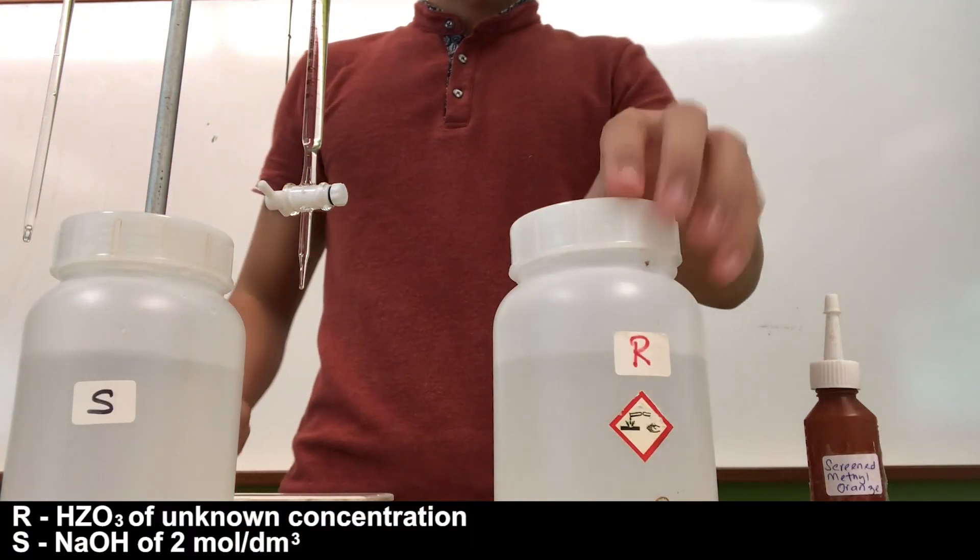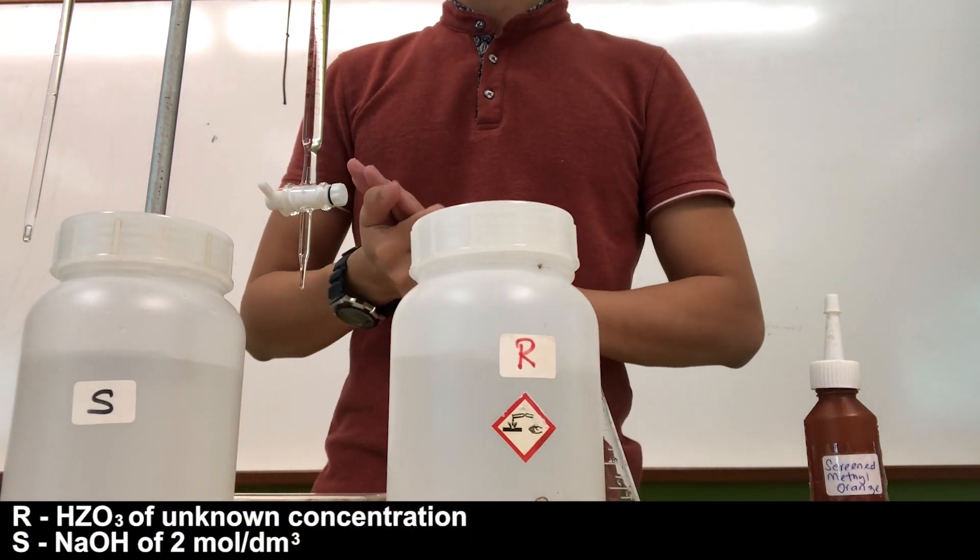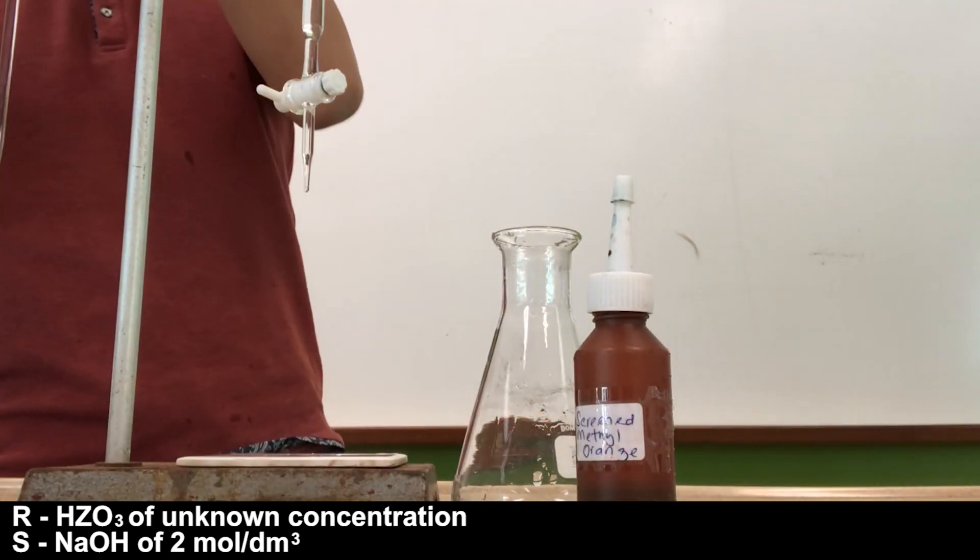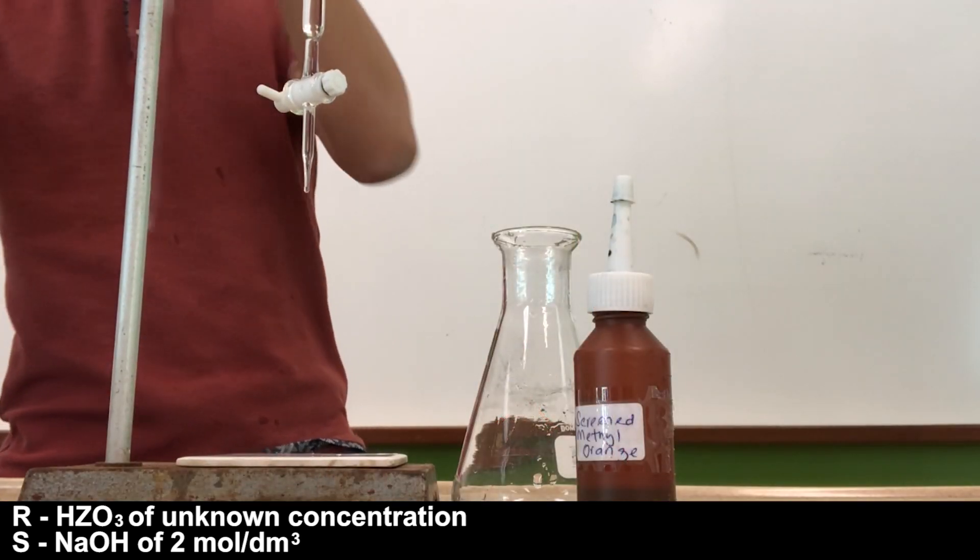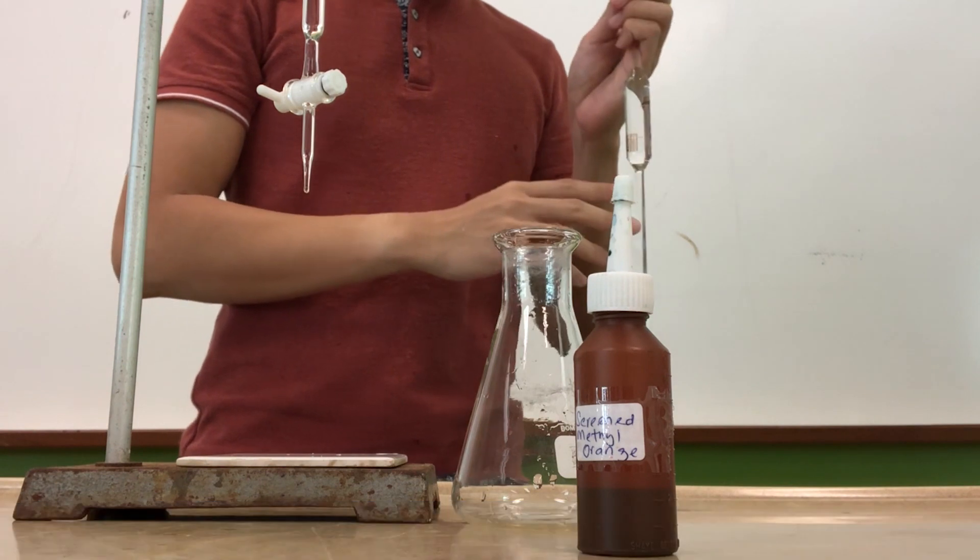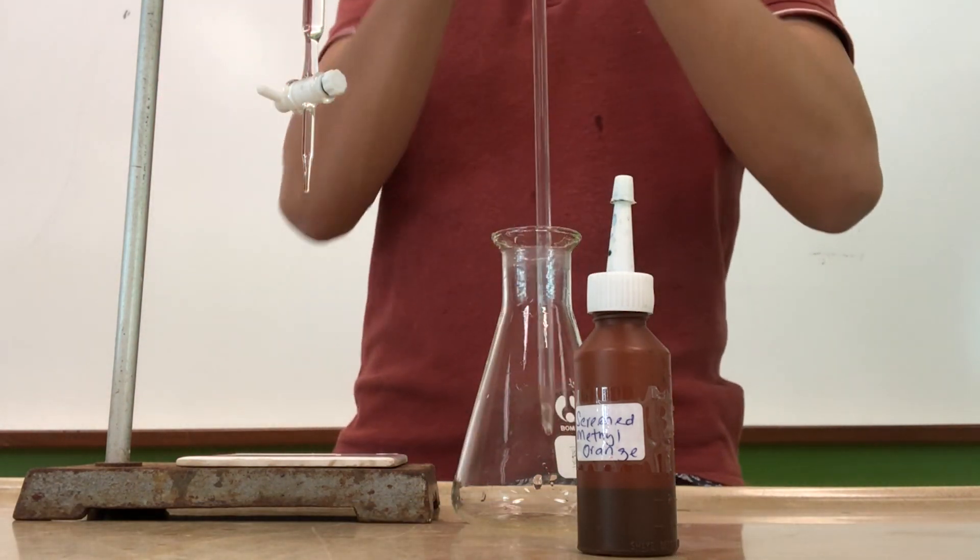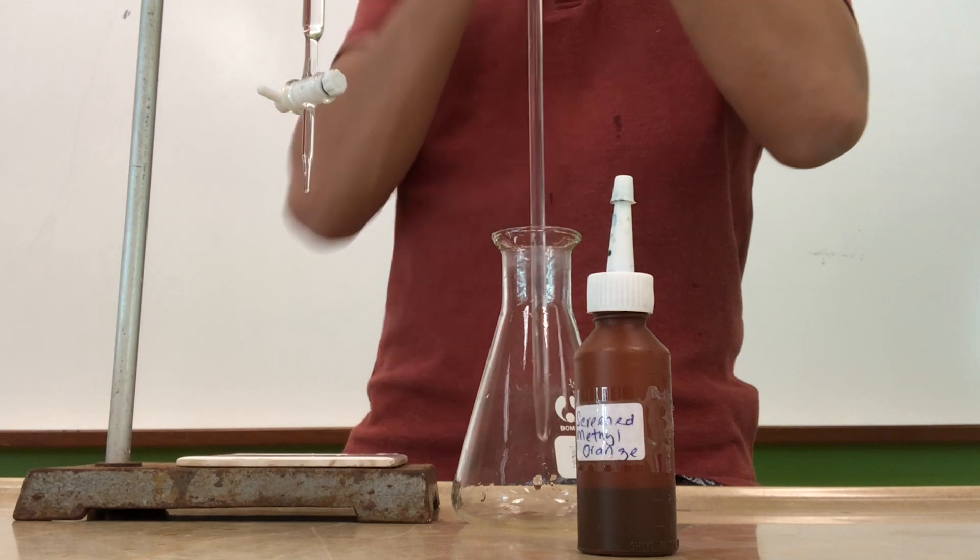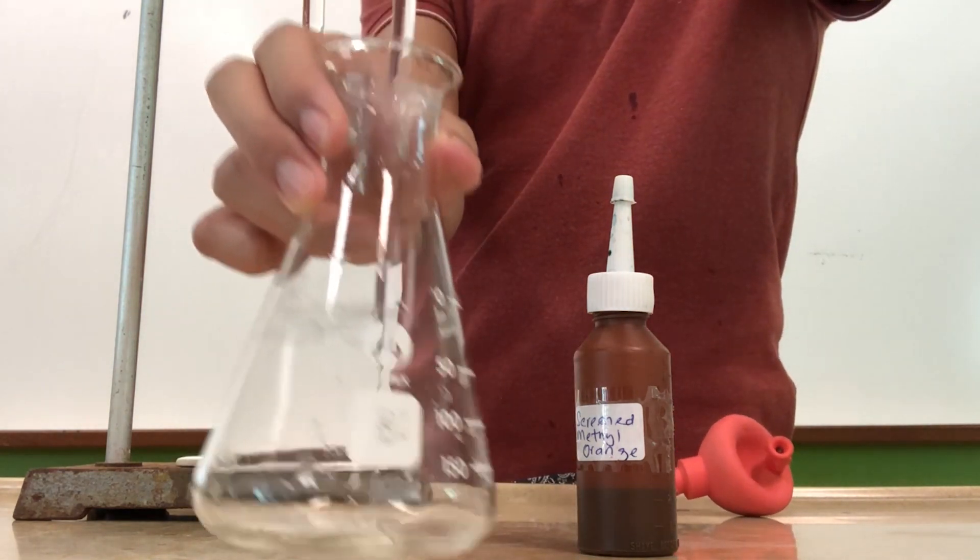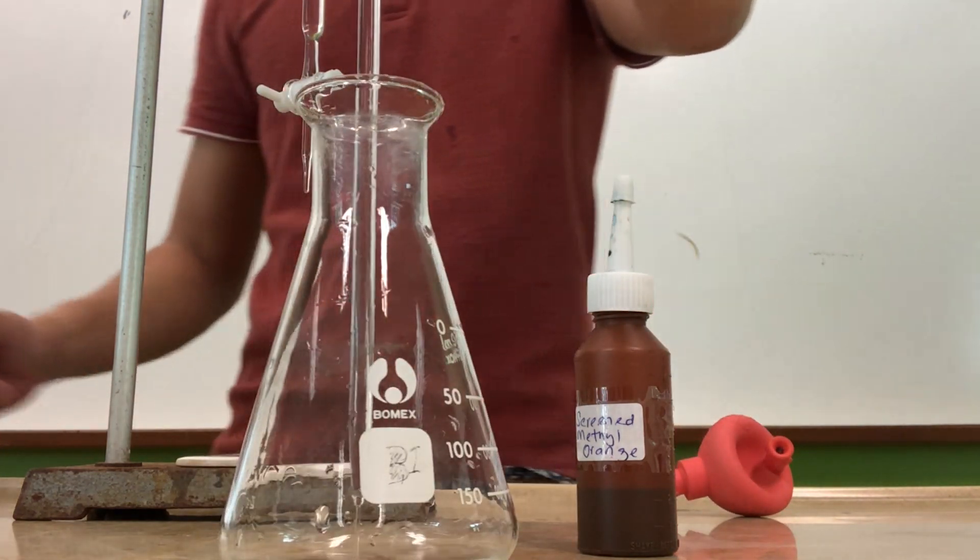In this part of the video, we are still going to do titration, but this time around we are going to use a different indicator. The solutions are exactly the same. So let us dispense the unknown acid into the conical flask. As I mentioned previously, make sure that your conical flask has already been rinsed with distilled water so that there are no impurities within it.